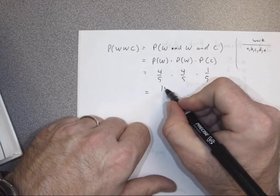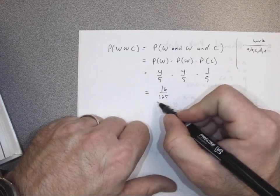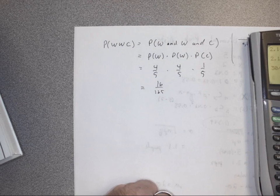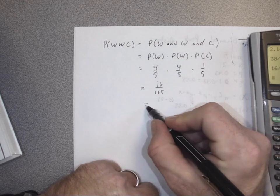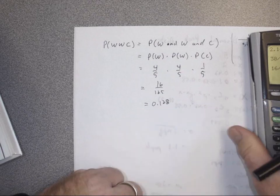We get 16 out of 125 when we multiply across, which is 16 divided by 125, giving us 0.128 to three sig figs.